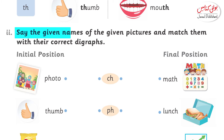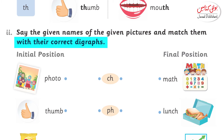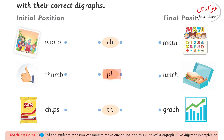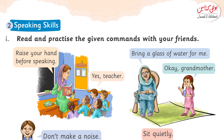Say the names of the given pictures and match them with their correct digraph. Yahaan pe aapko teen digraph diye gaye hain: ch, ph, and th. Inki final positions aur initial positions ko dekhte huye, aap ne inko unke suitable words ke saath match karna hai, yani ke jahaan pe inki sound produce ho rahi hai.